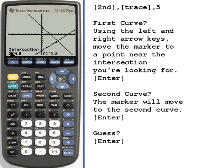Here it's telling me at the bottom of the screen that the intersection is where x equals 4.8 and y equals negative 3.2. Or as an ordered pair, that would be 4.8 comma negative 3.2.